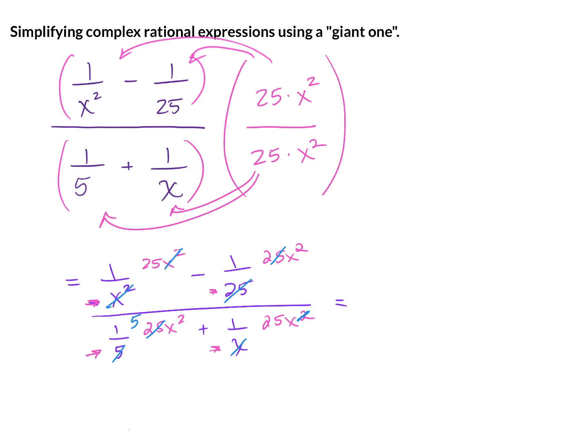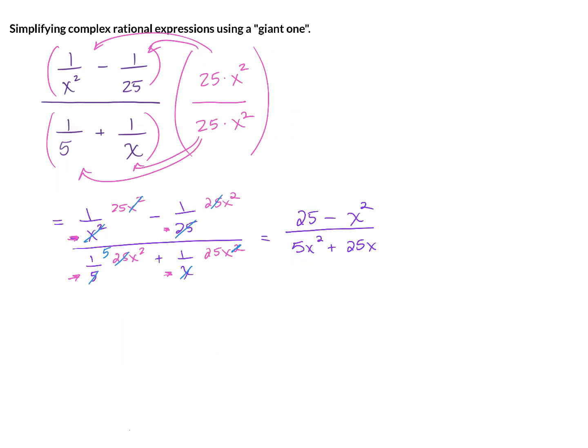So that gives me on the top 25 minus x squared. And on the bottom, we have 5x squared plus 25x. In this problem, we cannot cancel out the 25s or the x squareds. However, we can try to factor this to see if we can simplify it any more.